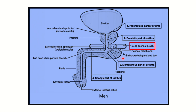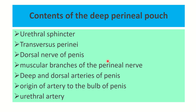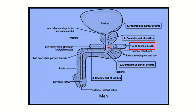It is easy to understand which structures pass through the deep perineal pouch to reach the penis — most contents must pass through this pouch to reach the penis. So we have the urethral artery, artery to the bulb of the penis, deep and dorsal arteries of the penis, muscular branches of the perineal nerve, dorsal nerve of the penis, transverse perinei, and the urethral sphincter, which lies in the membranous part of the urethra.